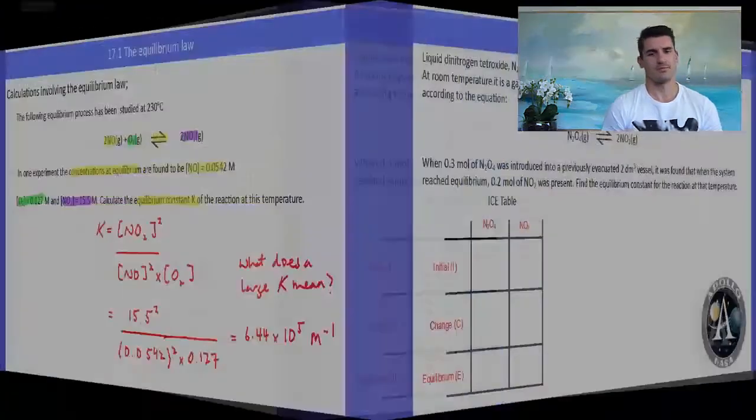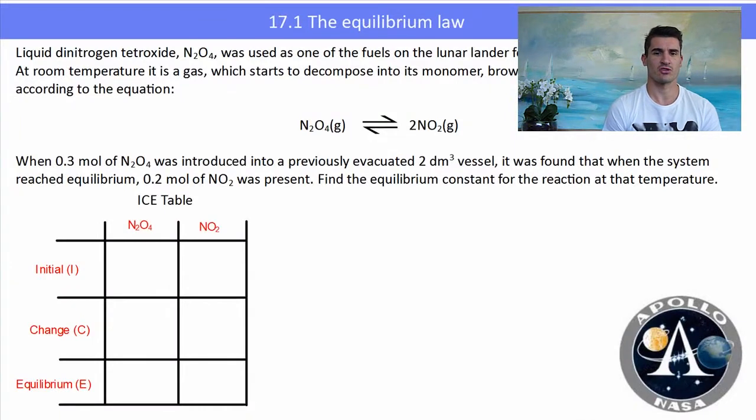The next one is a little bit different. Liquid nitrogen tetroxide, N₂O₄, was used as one of the fuels for the NASA Apollo lunar missions. At room temperature it is a gas which decomposes to brown NO₂(g) according to the equilibrium equation. When 0.3 moles of N₂O₄ was introduced into a previously evacuated 2 dm³ vessel, it was found that when the system reached equilibrium, 0.2 moles of NO₂ was present. Find the equilibrium constant at that temperature.